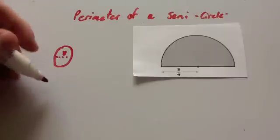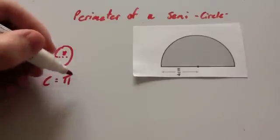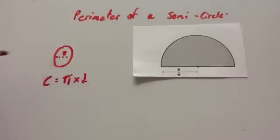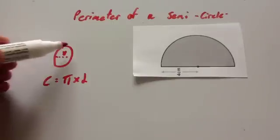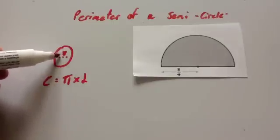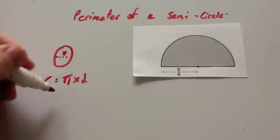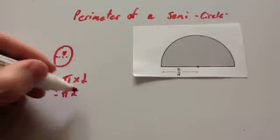So remember, circumference equals pi times diameter. If you don't know that or have forgotten it, watch the video on circumference of a circle. So circumference equals pi times diameter. So to get the circumference of this circle where it's got a diameter of 8, then you're going to do pi times 8.